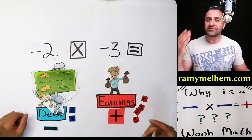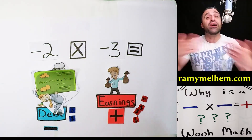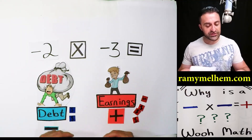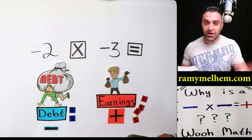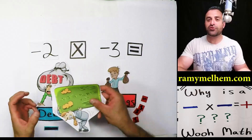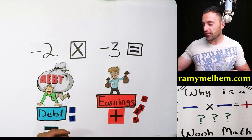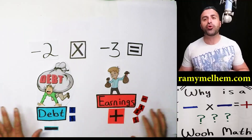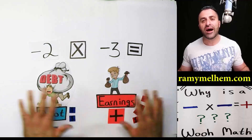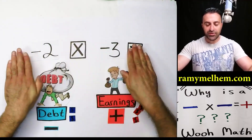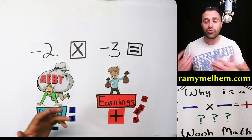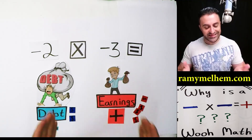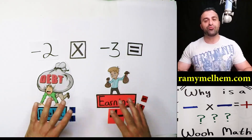This is debt you've incurred on yourself, and it's not good money unless you pay your credit card back on time. So how does this relate to multiplying negatives and positives? That's going to be the purpose of this entire lesson, because multiplying negatives and positives involves this kind of system.